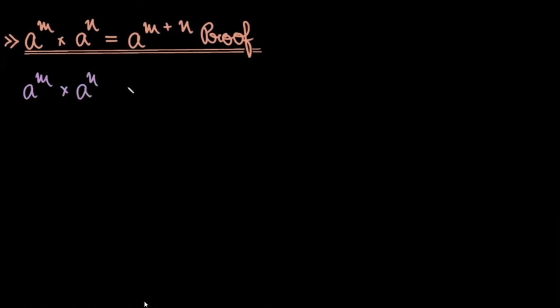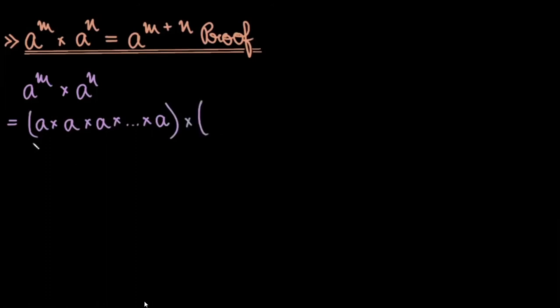I'll now explain the proof — it's quite simple. Suppose I have the expression a to the power m multiplied by a to the power n. You know the basic definition of exponents: what does an exponent mean? Multiplication many times. So a to the power m means multiplying a by itself m times. So I'll write what a to the power m means: it is simply a × a × a, m times.